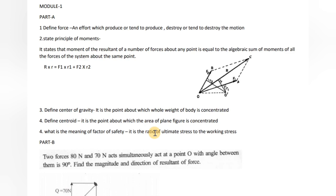Next question: What is the meaning of Factor of Safety? Factor of Safety is the ratio of ultimate stress to the working stress. That is: Factor of Safety = Ultimate Stress ÷ Working Stress. This is the definition of factor of safety for the Part B question.